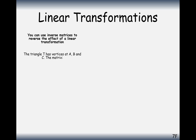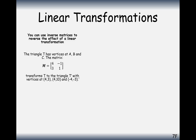We've got triangle T with vertices A, B and C. We've got a matrix A and we're told that this matrix transforms T with these coordinates to the triangle T with these coordinates. So these are the image coordinates — these are where the coordinates have ended up after their transformation, and we need to work out the original set of coordinates they came from. Part A is: find the original coordinates A, B and C.